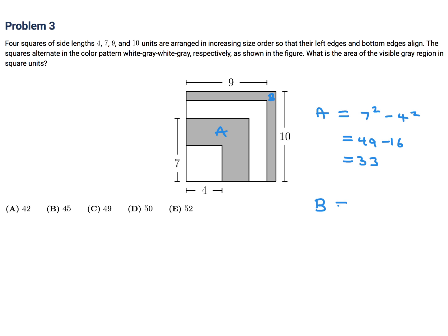And then B is going to be 10 squared minus 9 squared. And that's 100 minus 81, which is 19. So A plus B, which is what they want, would be 33 plus 19. And that is 52. And that would be answer choice E.